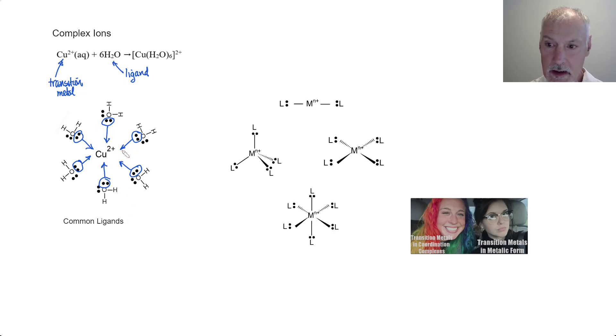The number of electron pairs donated is called the coordination number. In my example down here I have what we would call six coordination bonds, and this would correspond to the coordination number.